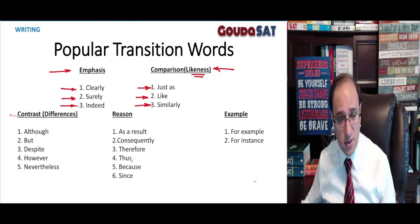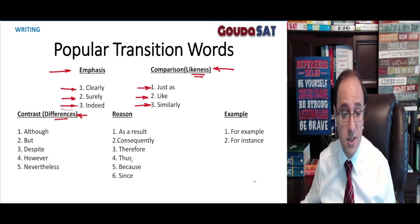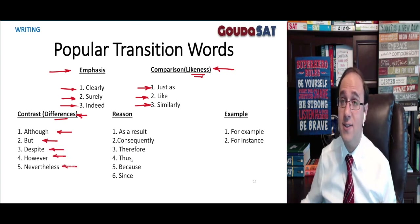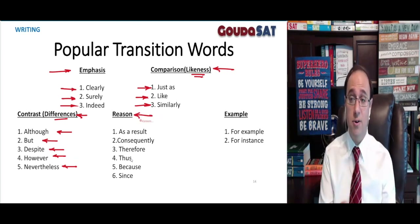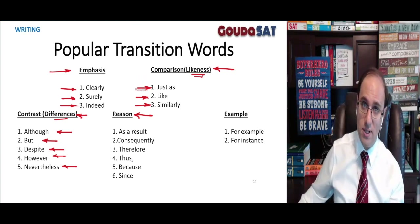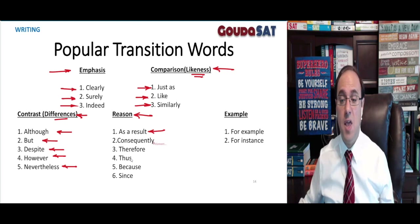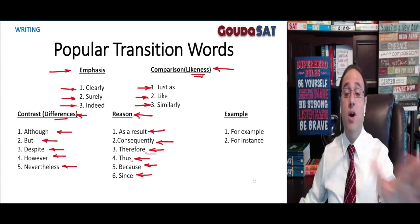To show contrast — to show that two parts of a sentence or two sentences have different or opposite meanings — we use words like although, but, despite, however, nevertheless. To show that one part is a reason for the other, something we call cause and effect — we have a cause, the reason, and we have an effect. Words like as a result, consequently, therefore, thus, because, and since. You need to memorize these words.